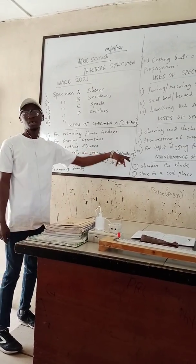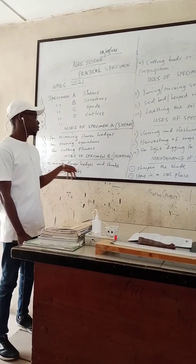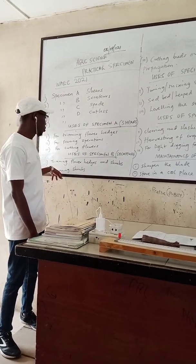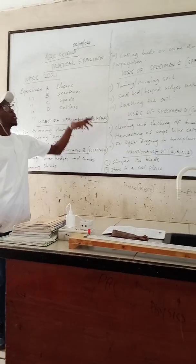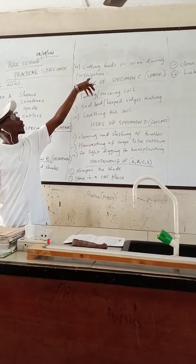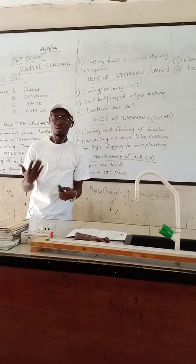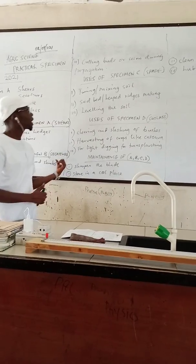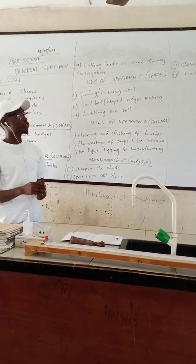Specimen B is secateurs. It is used for trimming flowers and shrubs. It is also used for cutting buds, or scions, when doing propagation. When we are doing propagation, we use the secateurs to cut the scions.